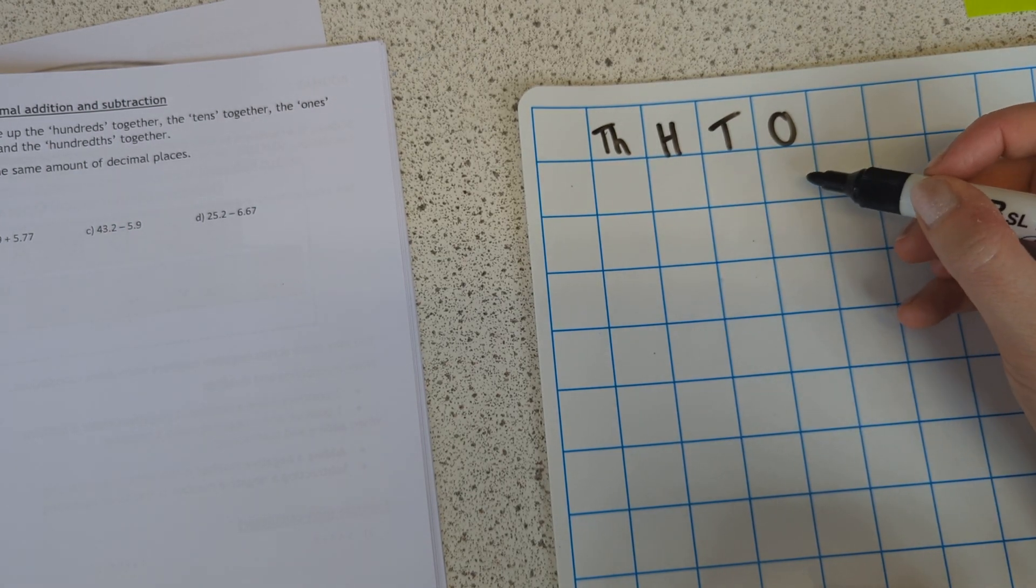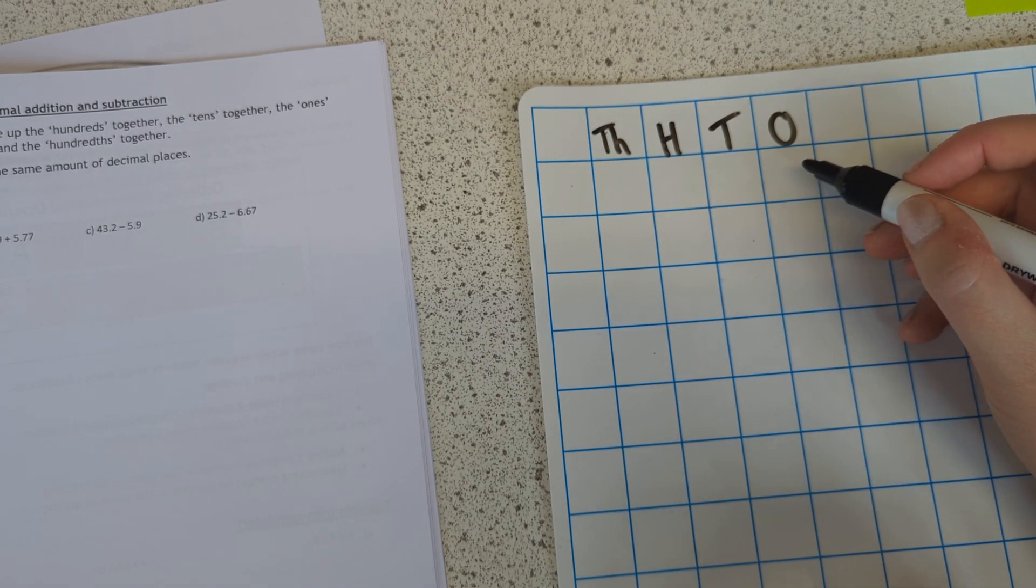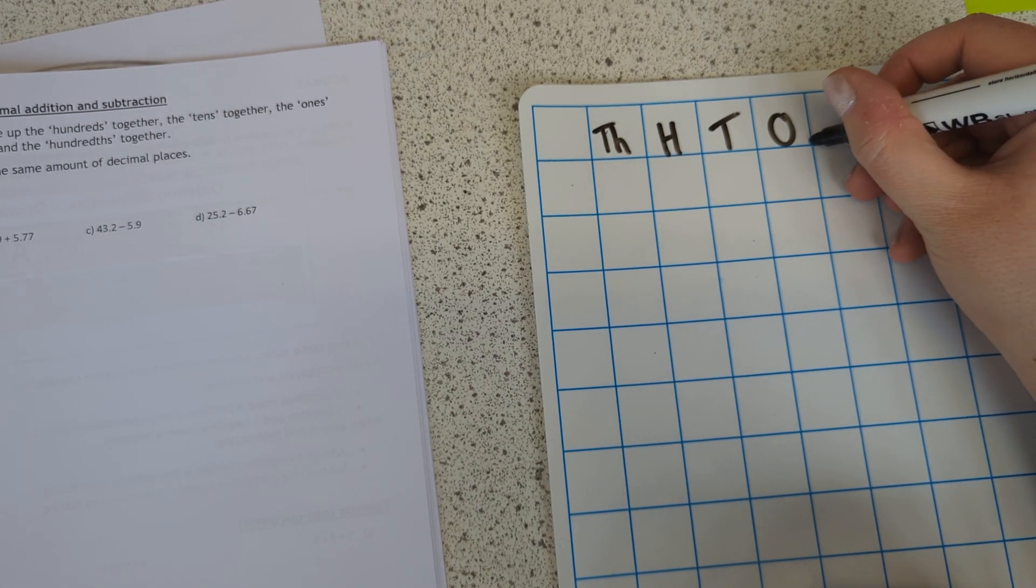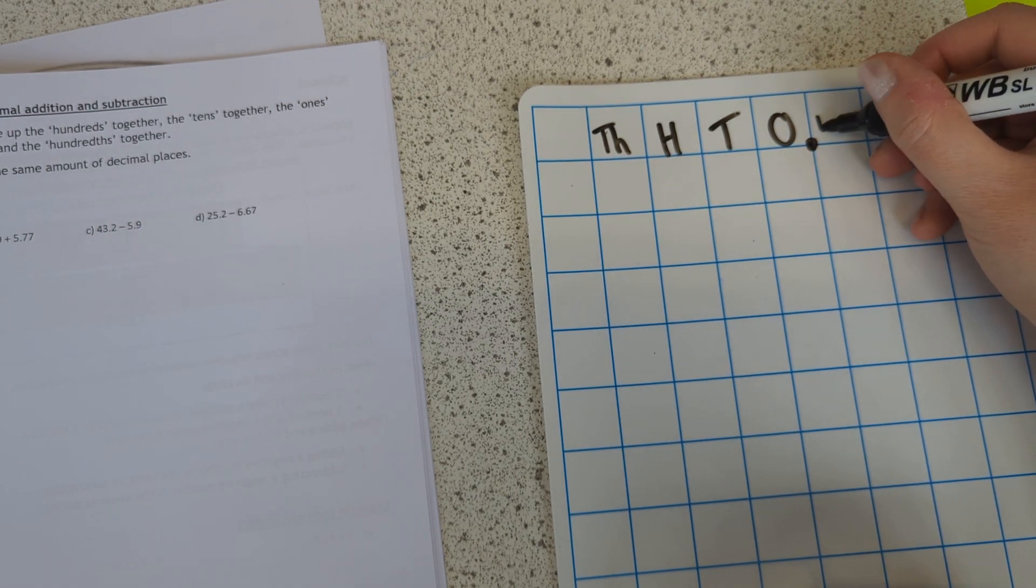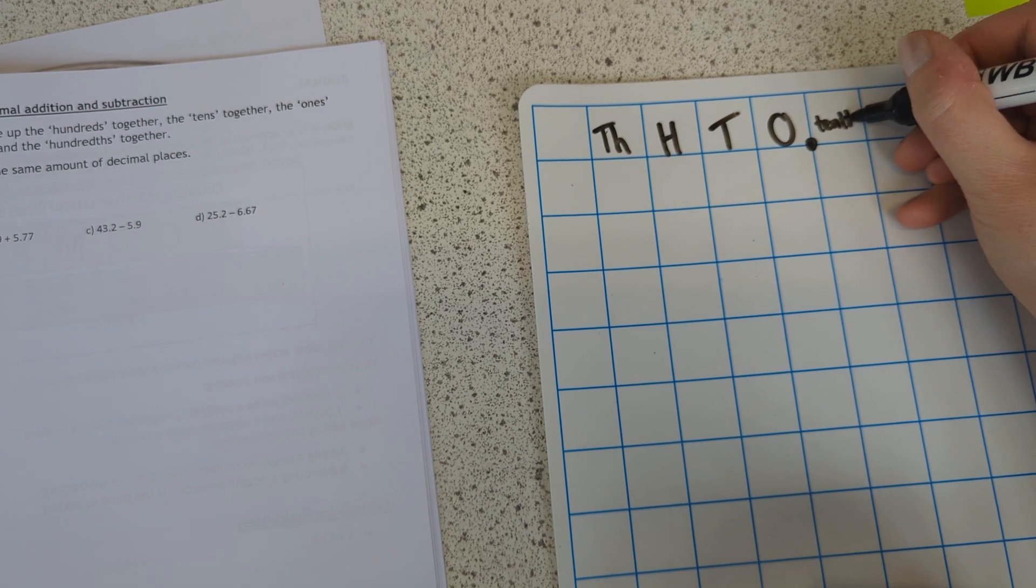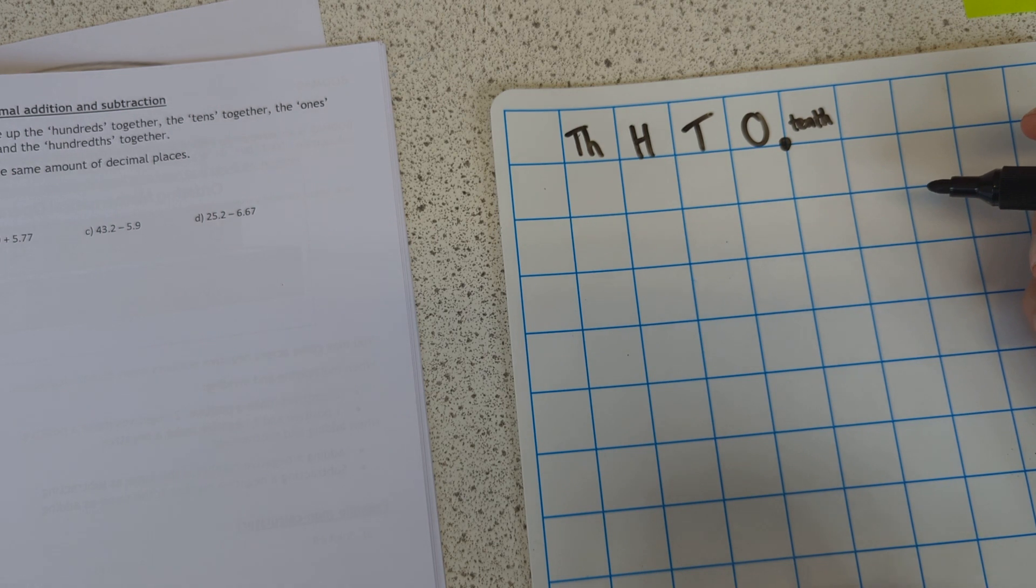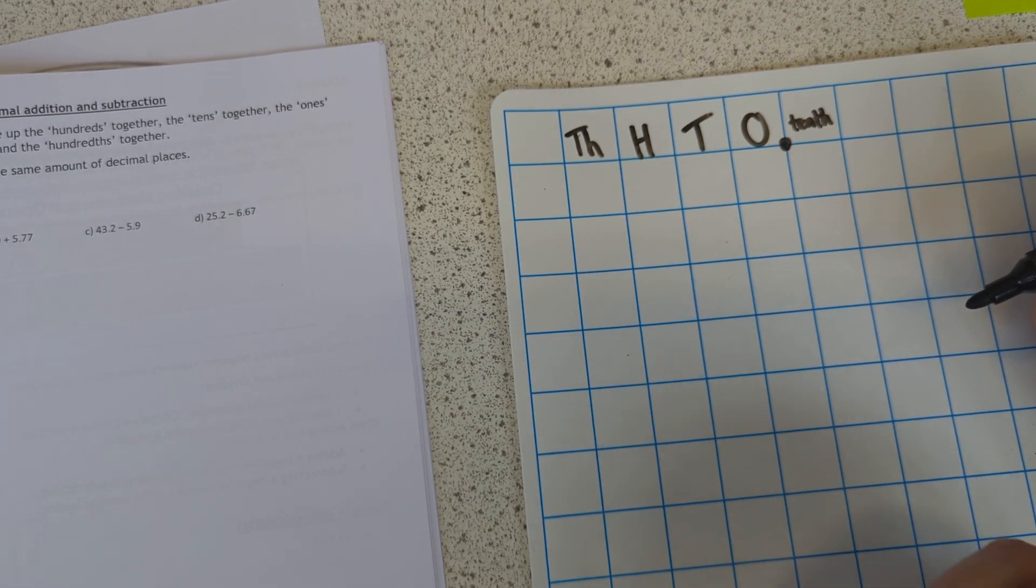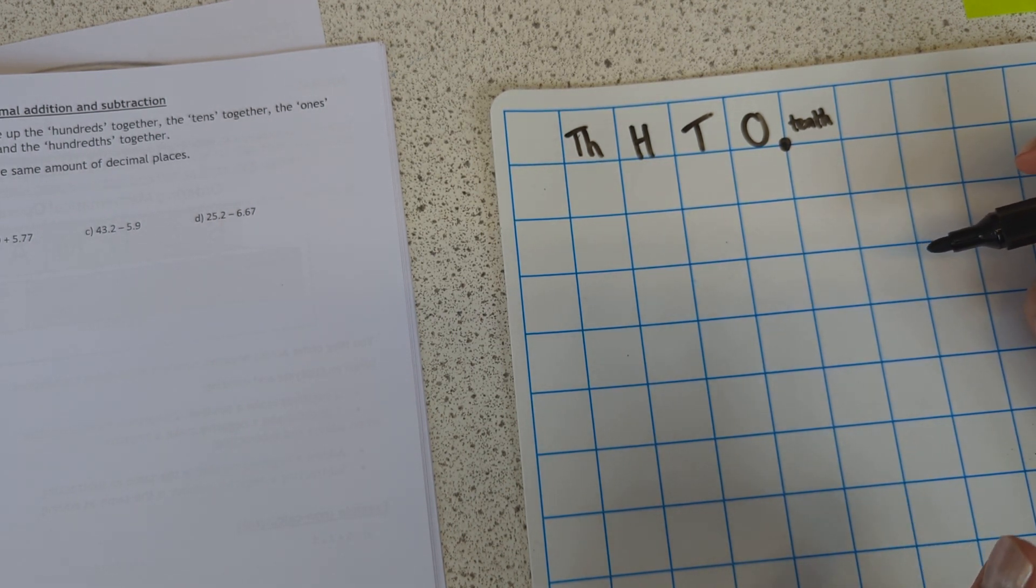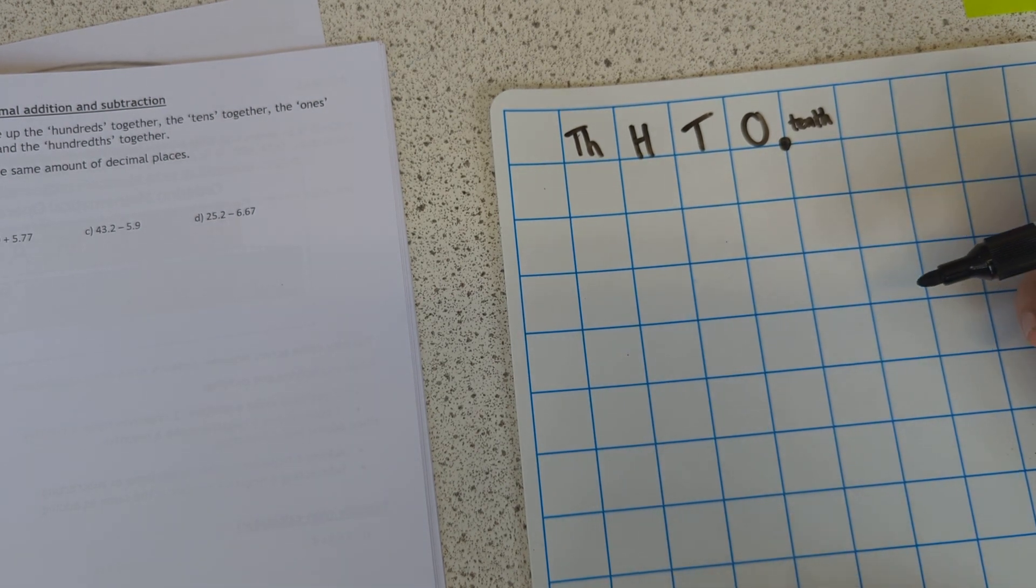And obviously there are ten lots of ones in ten. So there must be ten lots of tenths in our next column. So the next column represents tenths, which is like 0.1, 0.2, 0.3, 0.4, 0.5, 0.6, 0.7, 0.8, 0.9. And there are ten lots of tenths that make up one.